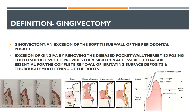The definition of gingivectomy is excision of the soft tissue wall of the periodontal pocket. In a normal scenario, the gingiva covers the CEJ. When there is a pocket, there is attachment loss. In gingivectomy, you remove the soft tissue wall of the periodontal pocket, thereby exposing the tooth surface.